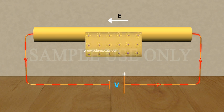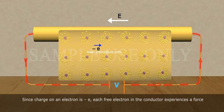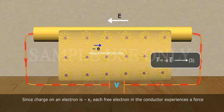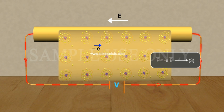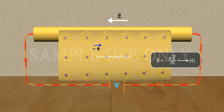Since the charge on the electron is negative e, each free electron in the conductor experiences a force F = -eE (Equation 3), in a direction opposite to the direction of the electric field. If m is the mass of the electron, then the acceleration produced is given by a = eE/m (Equation 4).